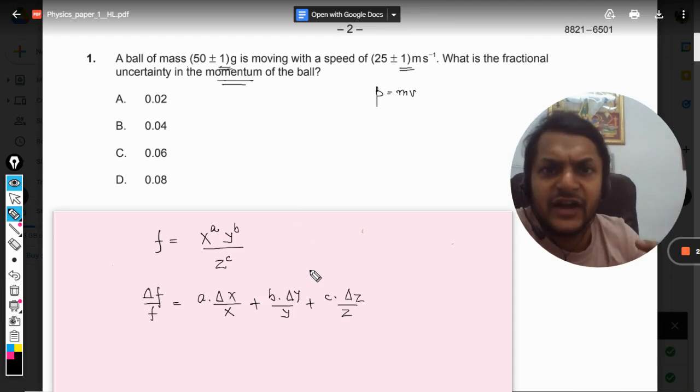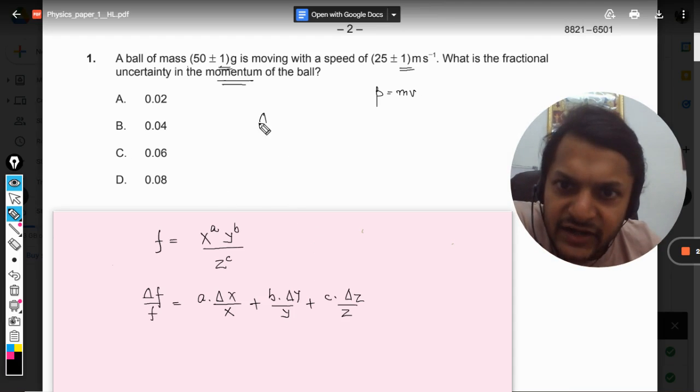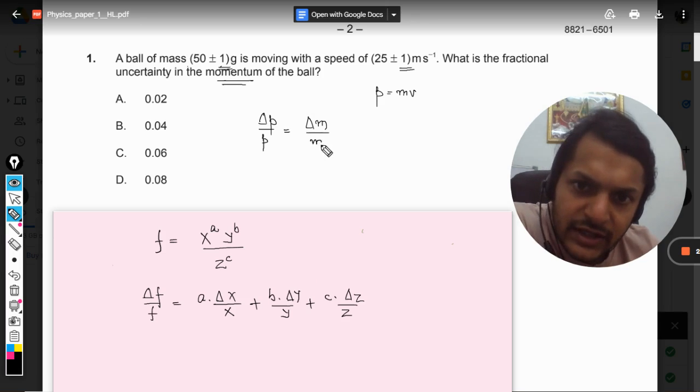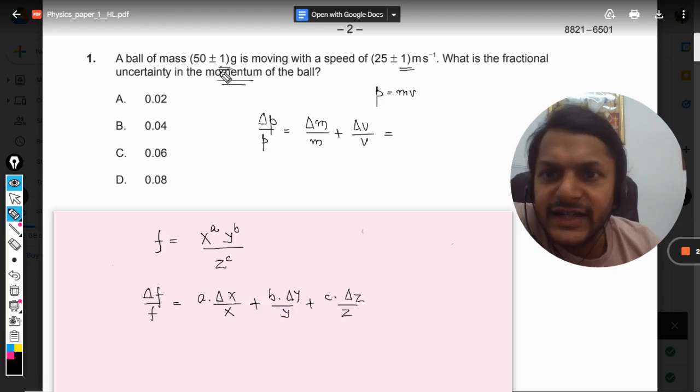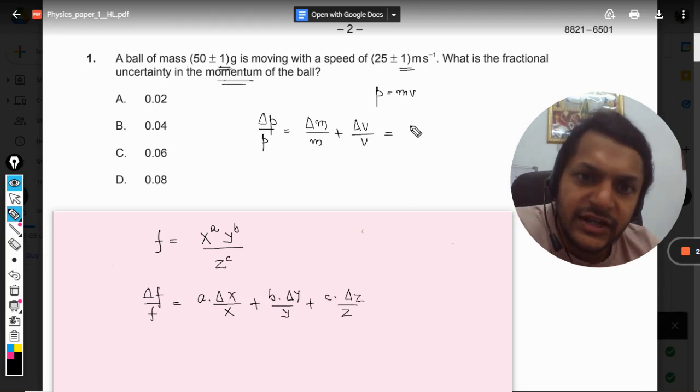By using this simple formulation, you will be able to find the fractional uncertainty. So in this case, I can very well write Δp/p is equal to the summation of Δm/m plus Δv/v.